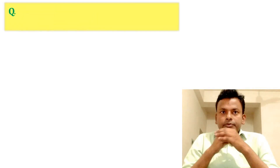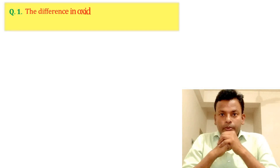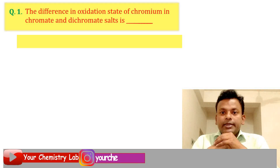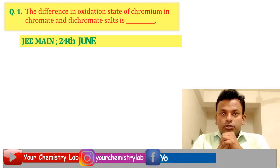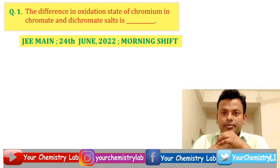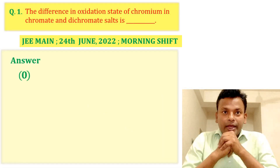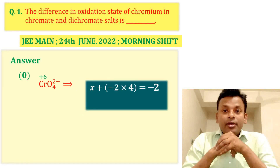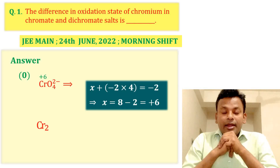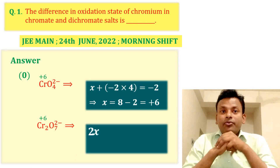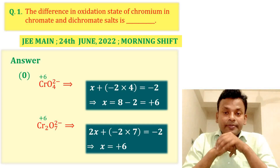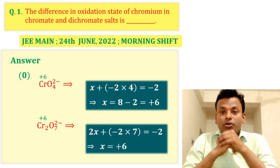Question one: The difference in oxidation state of chromium in chromate and dichromate salt is? This question was set in JEE Main 24th June 2022 morning set. The answer is zero. In chromate ion CrO₄²⁻, chromium has a plus six oxidation state, and in dichromate Cr₂O₇²⁻, chromium also has a plus six oxidation state, so the difference is zero.